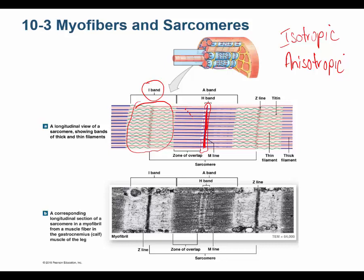Another protein is titin — named because it is a very large protein. Titin connects the thick filaments to the Z line. It is drawn as a wave on purpose, because it has slack that can be pulled taut. When you stretch a muscle, the titin molecules are pulled taut and help prevent overstretching.